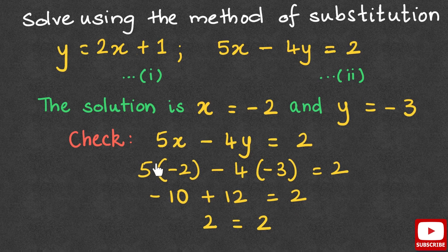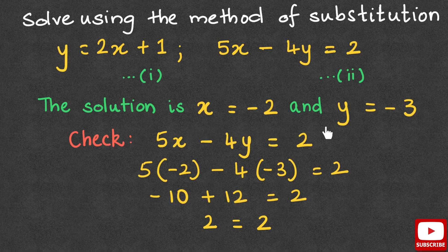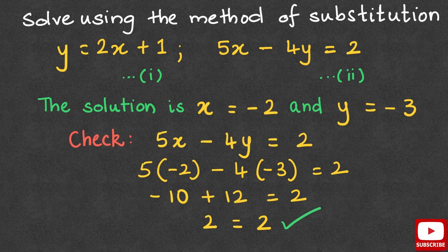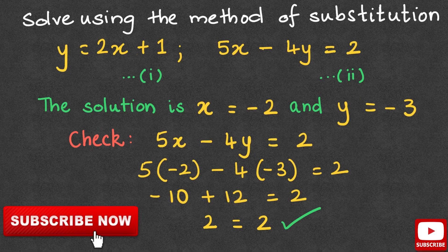After checking, we can say that our solution x equals negative 2 and y equals negative 3 for the two given simultaneous equations is correct. I hope you enjoyed learning from this video. Please like and share the video and subscribe to my channel. Thank you for watching.